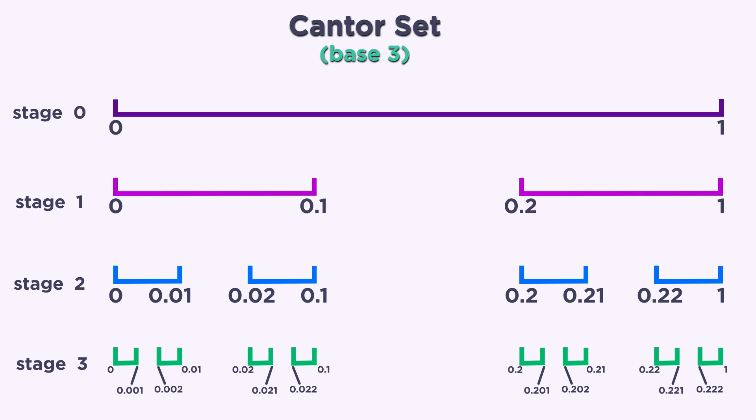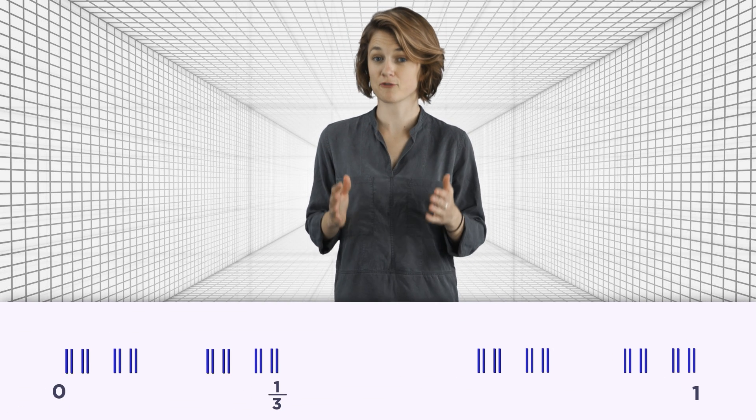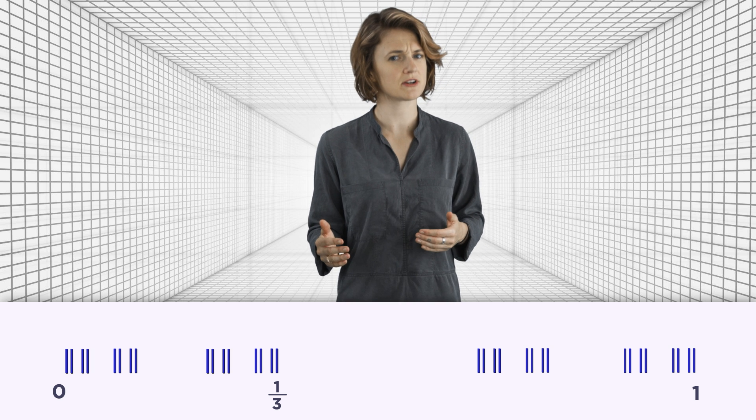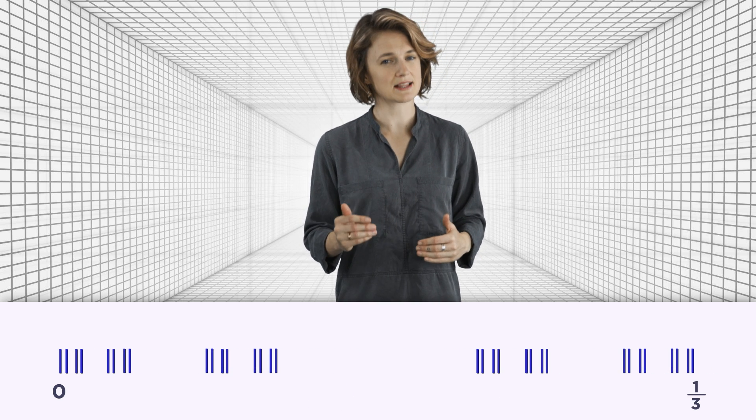So, what remains after infinitely many stages, the Cantor set, is exactly all the points whose base 3 expansion contains no 1s. Not only is the Cantor set not empty, it contains tons and tons of points, and they're easy to write down in base 3. Notice that the Cantor set is a fractal, or self-similar, in the sense that you can zoom in on it and it will look exactly like the whole set.